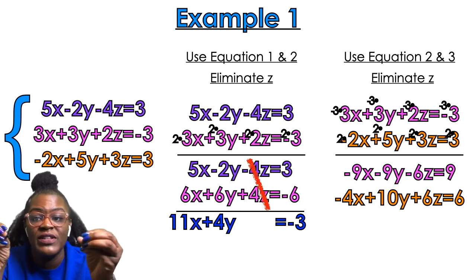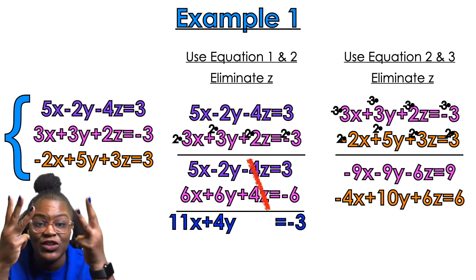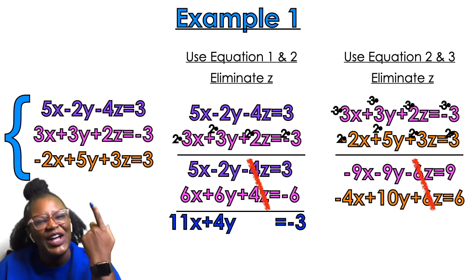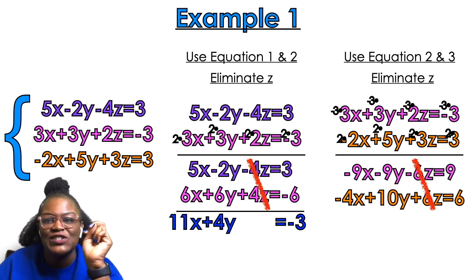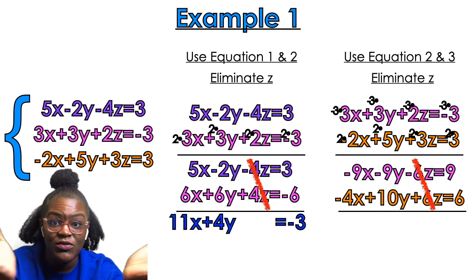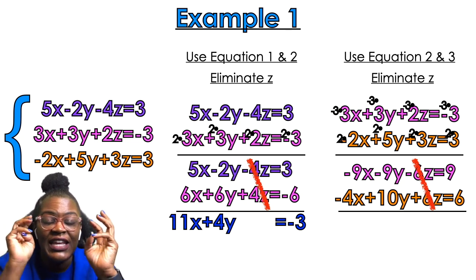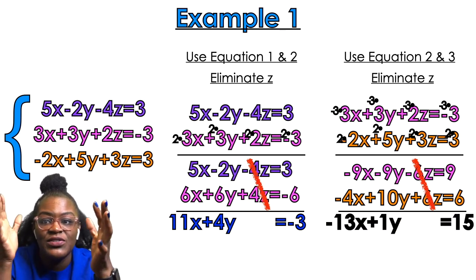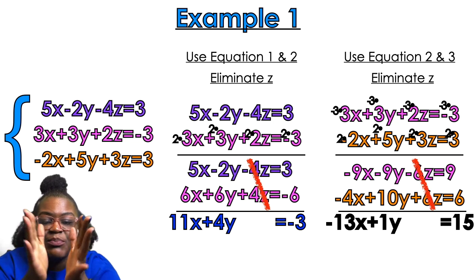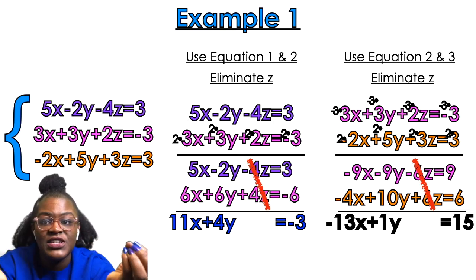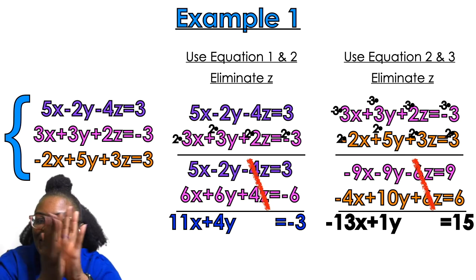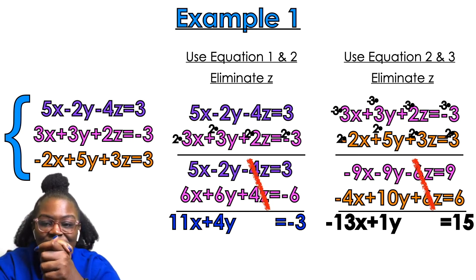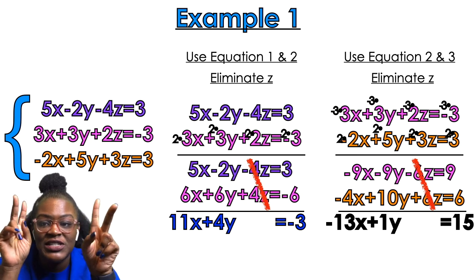Now I have a negative 6z and a positive 6z, so they eliminate. Drawing my line and figuring out what's left: negative 9 plus negative 4x gives me negative 13x. Negative 9 plus positive 10y gives me just one y. And 9 plus 6 gives me 15. So that's my black equation. Now I have the blue and black equations — both with only two variables. That's exactly what I wanted.